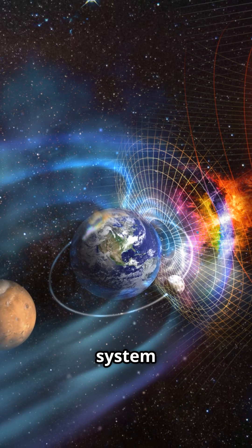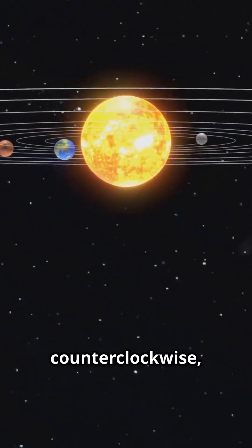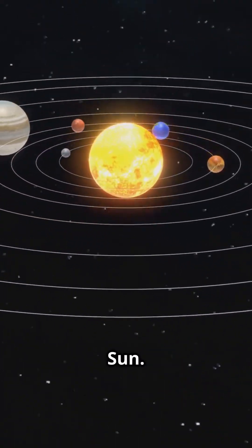Do all the planets in our solar system spin the same way? Most do. They spin counterclockwise, just like they orbit the Sun.